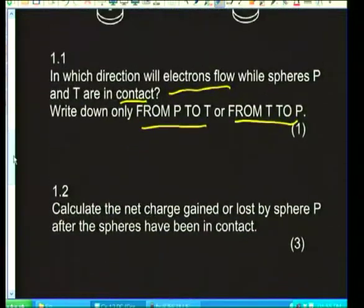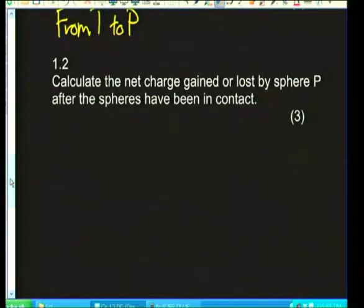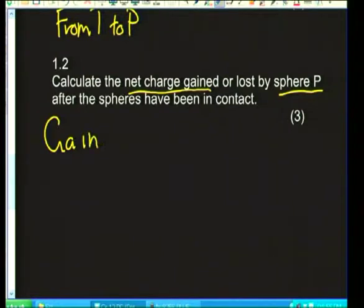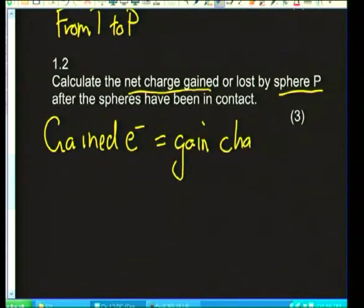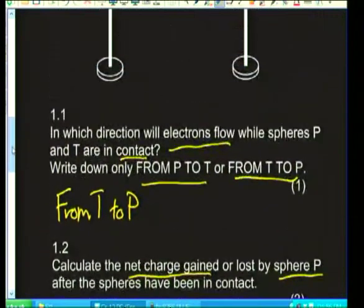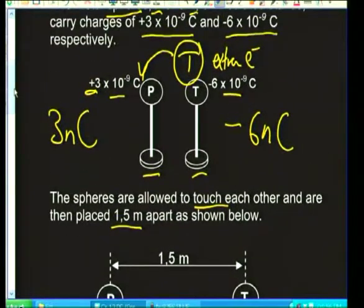Let's move on: calculate the net charge gained or lost by sphere P. First, electrons moved from T to P, so P gained electrons — it gained negative charge.